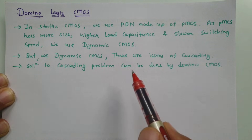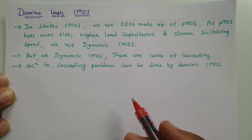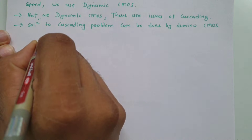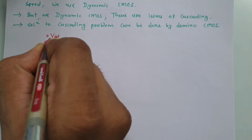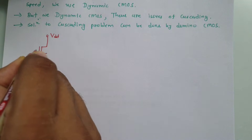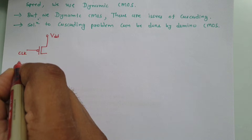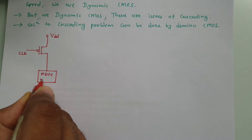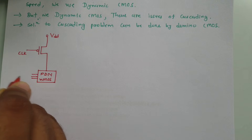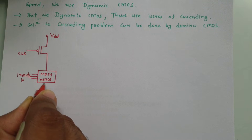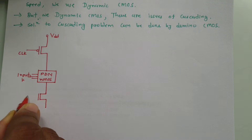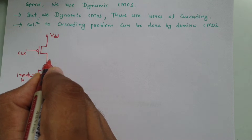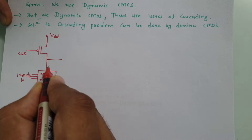First, I'll explain the basic structure of Dynamic CMOS. In its basic structure, here we have VDD. After that, we connect a gated clock PMOS. After that, there is a pull-down network made up of NMOS. There can be K inputs with this pull-down network. After that, there is a gated clock NMOS. And then here we have the output in Dynamic CMOS.